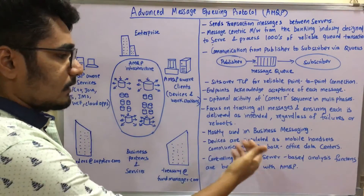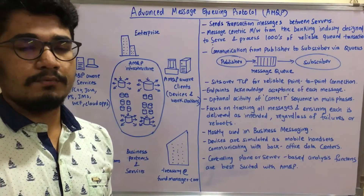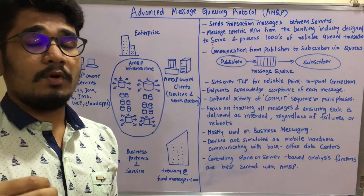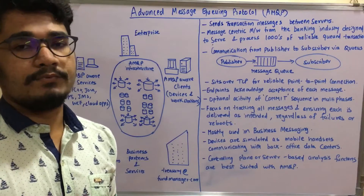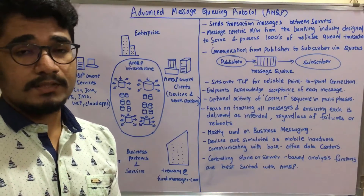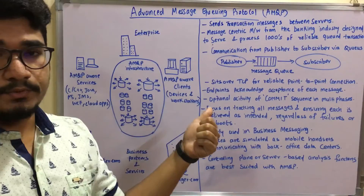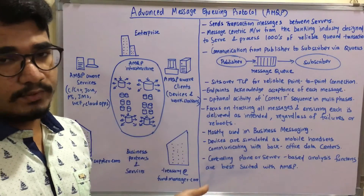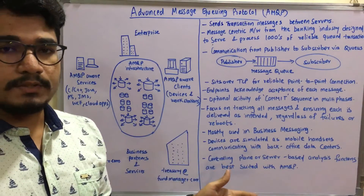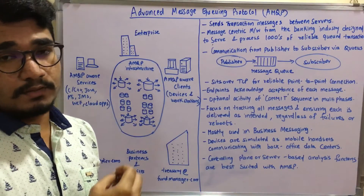If you want to run server-based analysis or monitor logs — for example, reviewing the past 10 years of transaction data — AMQP is best suited for this in IoT systems. It is the most widely used and most rapidly growing protocol, considered the protocol for tomorrow's IT systems.